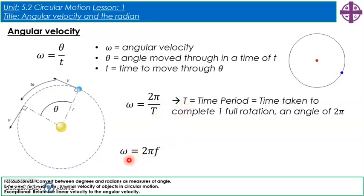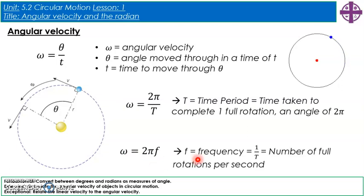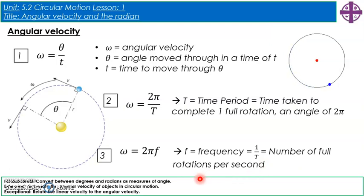A third equation: omega equals 2πf, where f is the frequency — the inverse of the time period, or the number of full rotations per second. So we have three new equations in total.